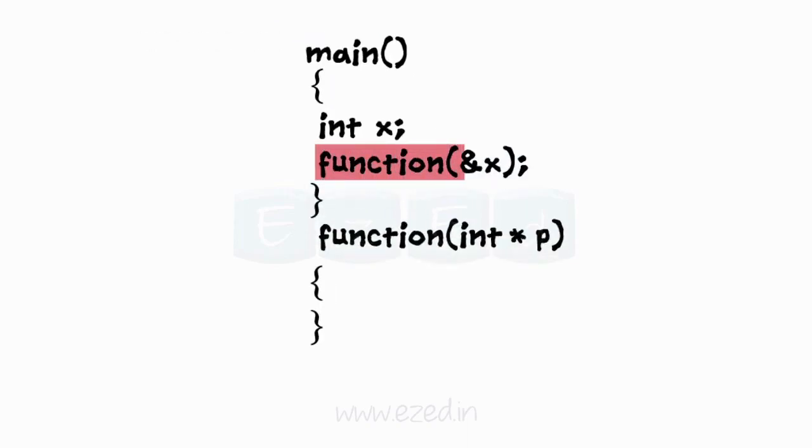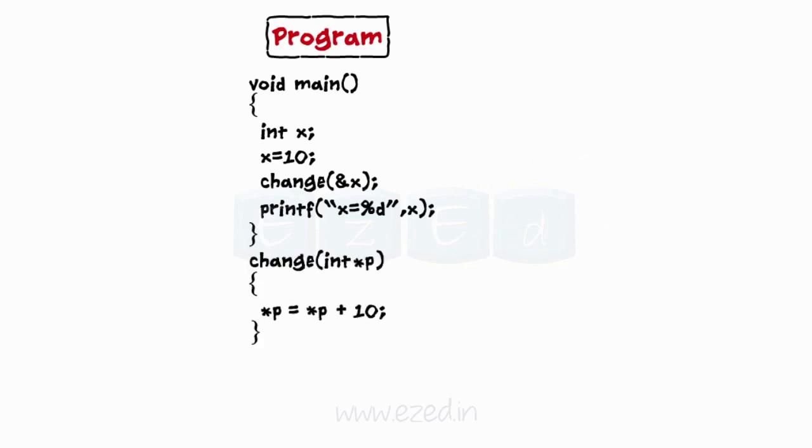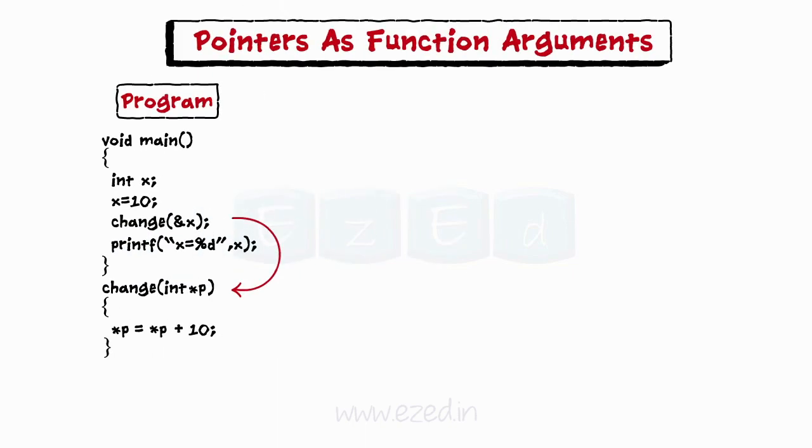Now let us see how pointers can be used as function arguments. As you can see, the address of the variable can be passed to a function. Thus, the process of calling a function using pointers to pass the addresses of variables is known as call by reference. Let us look at C program that explains the call by reference in detail. Look at the following program. What are we doing here is passing the address of x to function change.